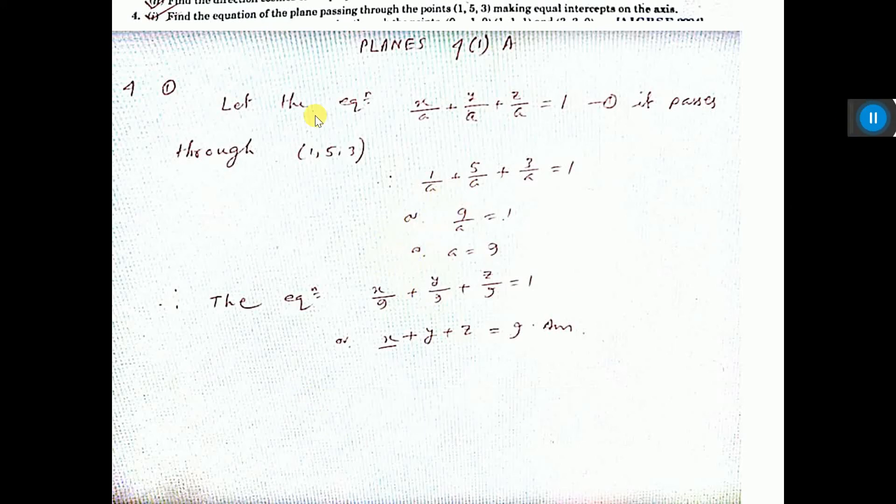Find the equation of the plane passing through the point (1,5,3) making equal intercepts on the axes. The equation we should consider is x/a + y/b + z/c = 1.